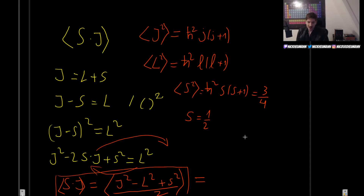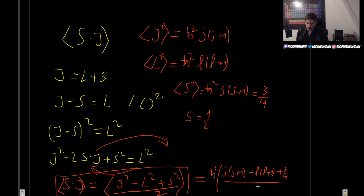This means the expectation value of S dot J is going to be ℏ² times j(j+1) minus l(l+1) plus three over four, all divided by two. That is this expectation value, and we will then plug it in to what we found before.